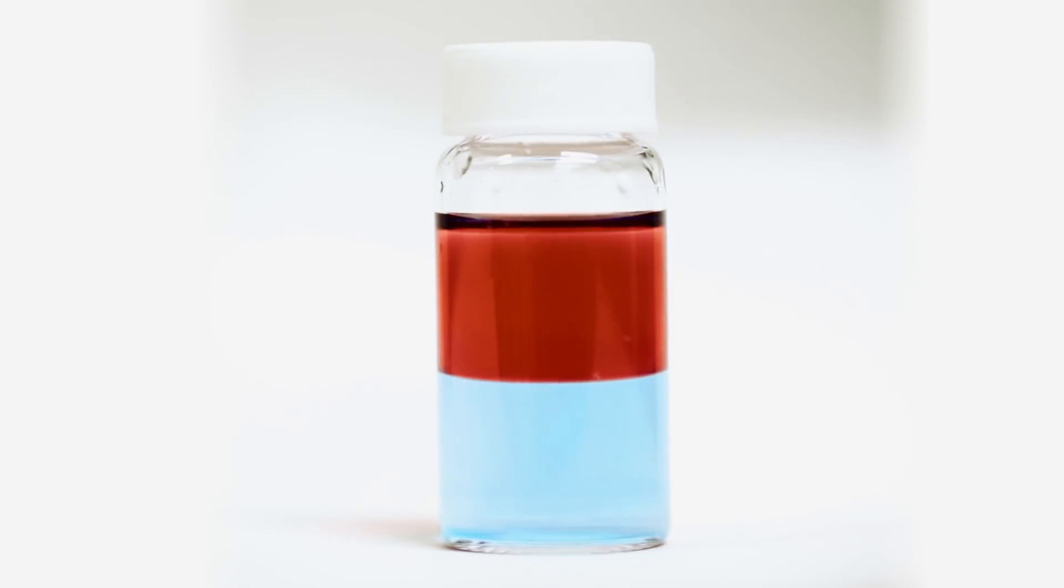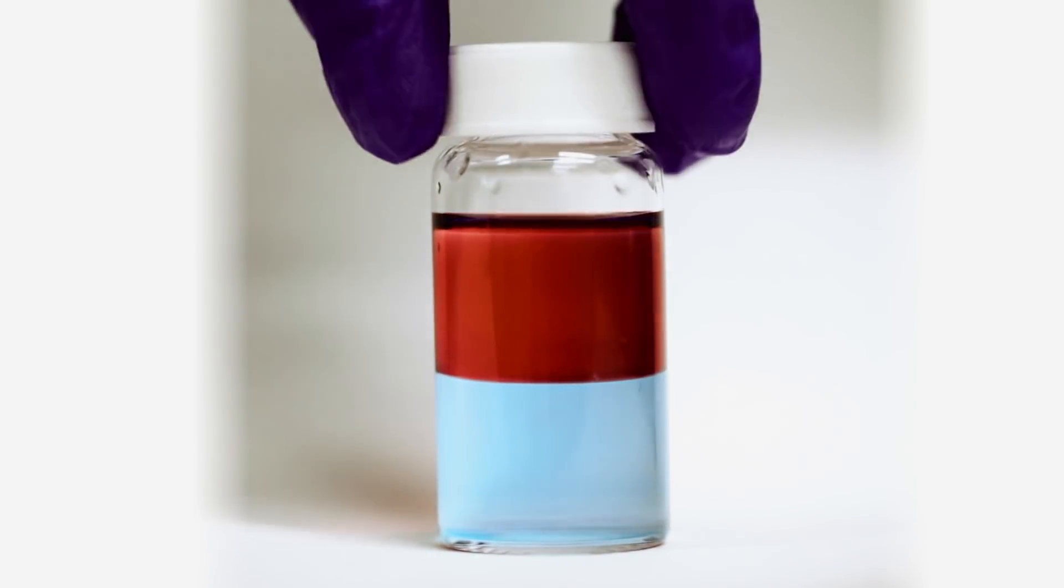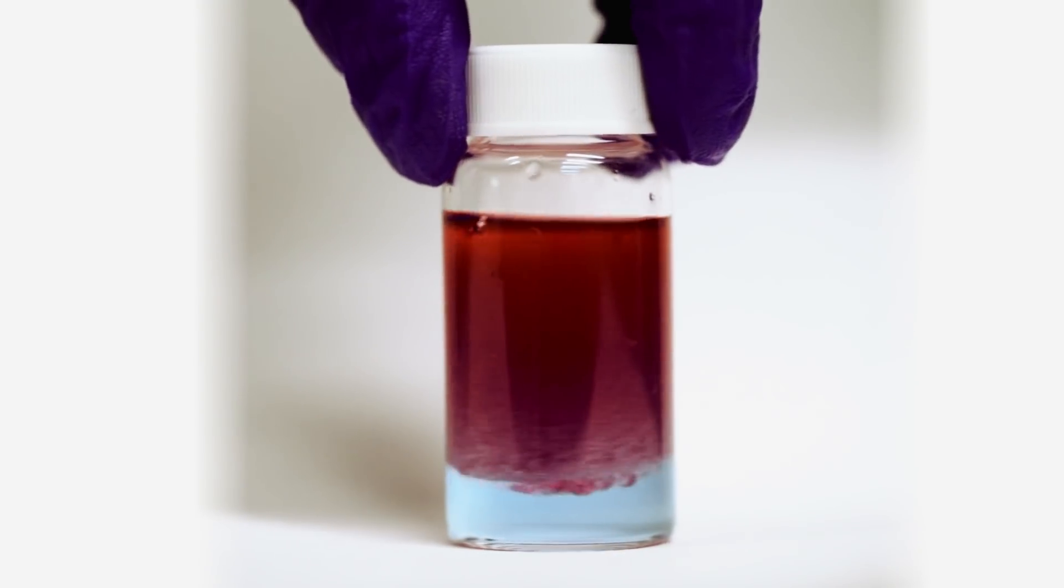Here we have oil and water represented by the colors red and blue. Alone, these two liquids will not mix together, but add in a soap-like substance called a surfactant, then mix, and suddenly the two liquids will blend.